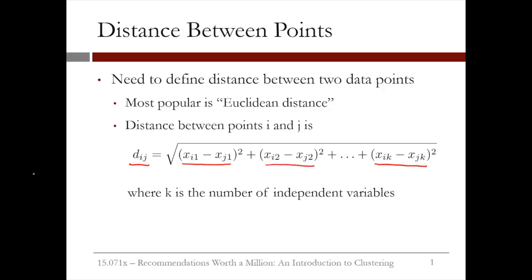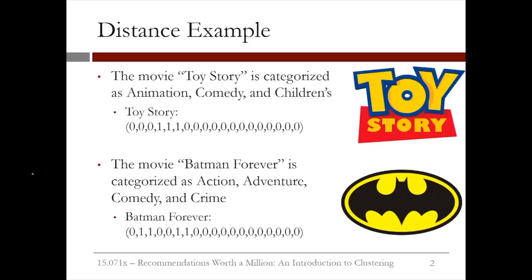Let's see how this works by looking at an example. In our MovieLens dataset, we have binary vectors for each movie classifying that movie into genres. The movie Toy Story is categorized as an animation, comedy, and children's movie. So the data for Toy Story has a one in the spot for these three genres and a zero everywhere else.